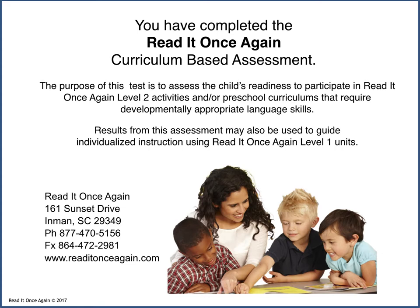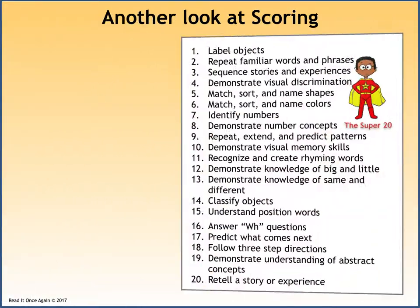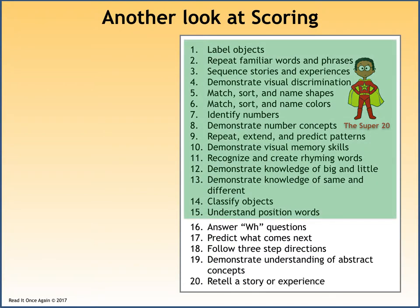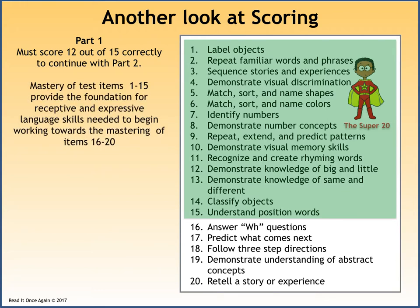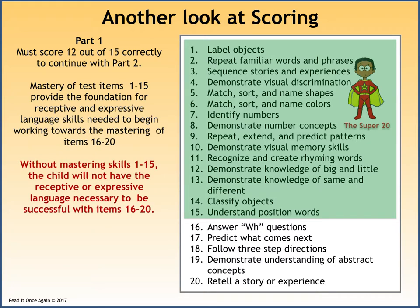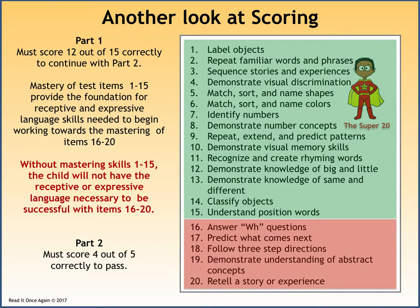You've completed the Read It Once Again curriculum-based assessment. The purpose of this test is to assess the child's readiness to participate in Read It Once Again Level 2 activities and/or preschool curriculums requiring developmentally appropriate language skills. Results may also be used to guide individual instruction using Read It Once Again Level 1 units. Skills 1 through 15 in the green box are Part 1 — a child must score 12 out of 15 to continue with Part 2. Mastery of items 1 through 15 provides the foundation for receptive and expressive language skills needed to begin mastering items 16 through 20. Without mastering skills 1 through 15, the child will not have the language necessary to be successful with items 16 through 20. Part 2 skills 16 through 20 are in the red box — the child must score 4 out of 5 correctly to pass.